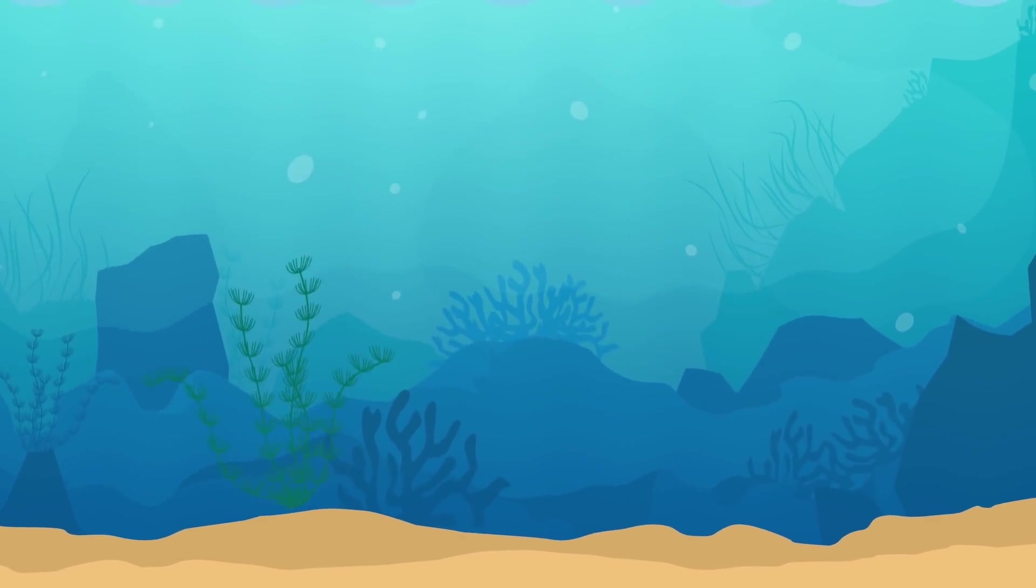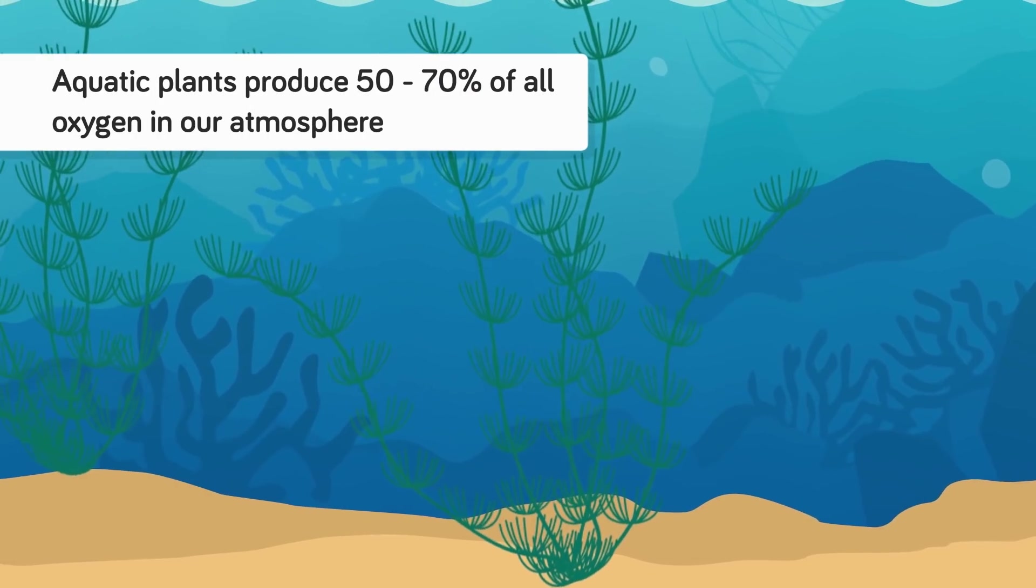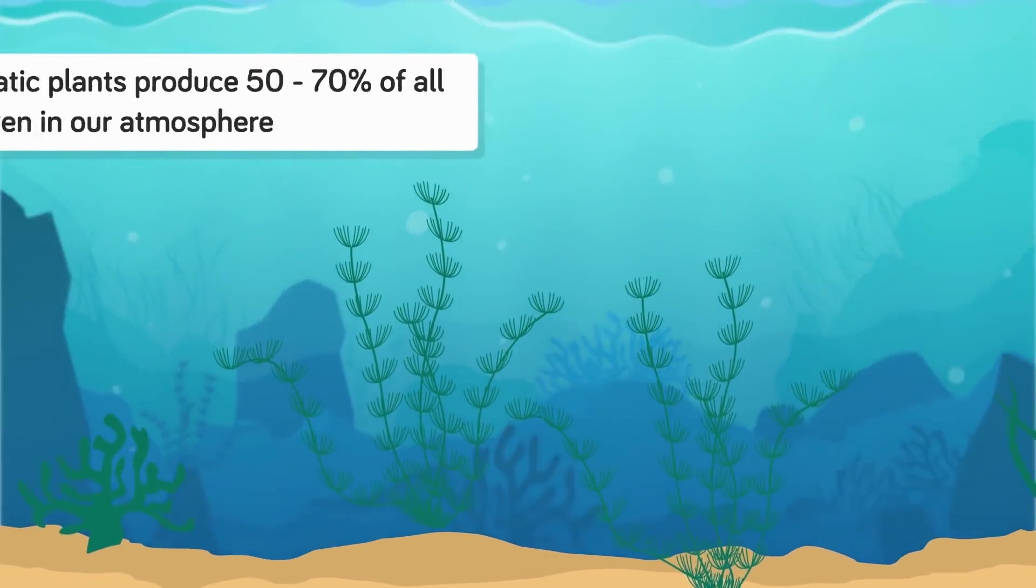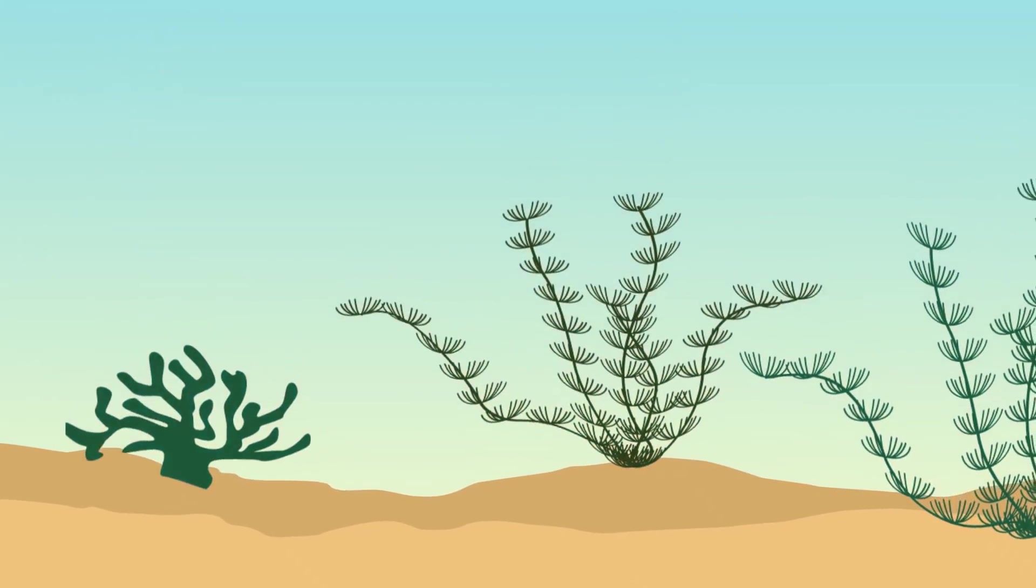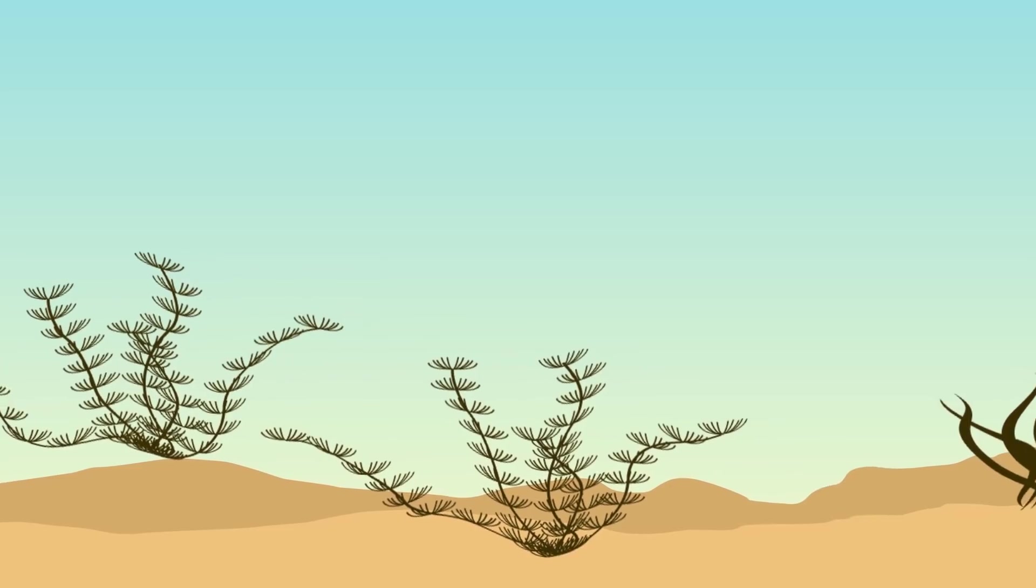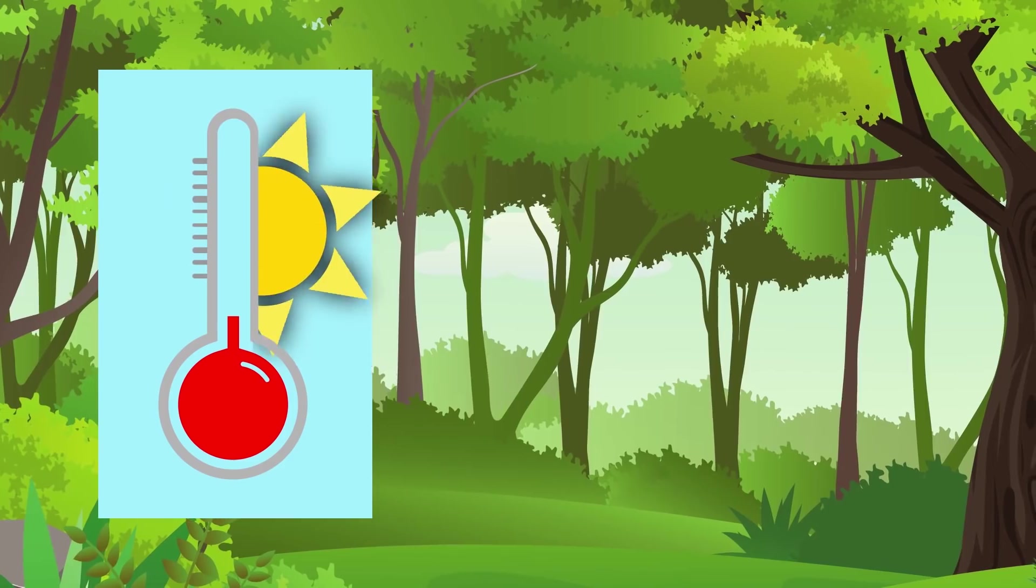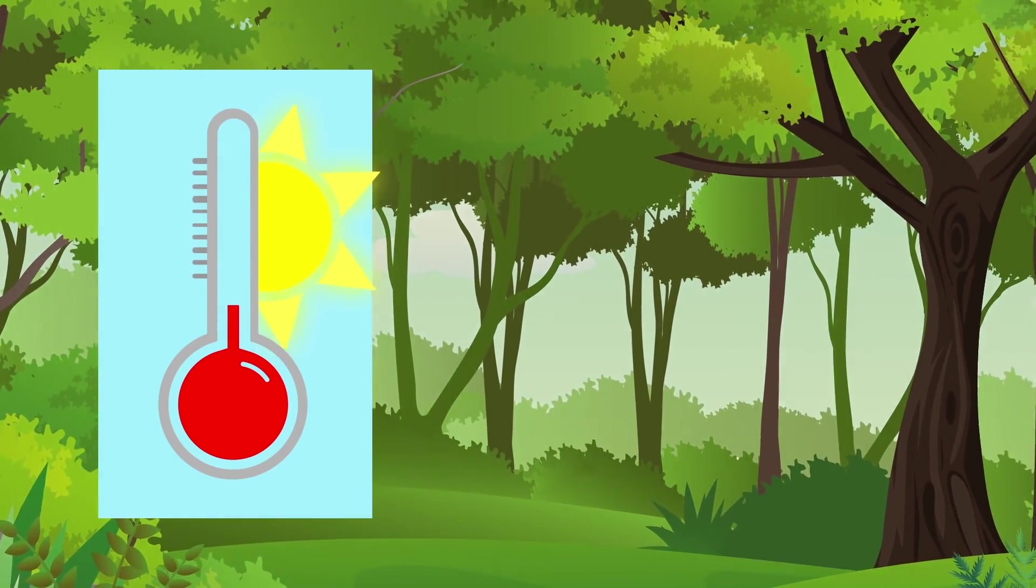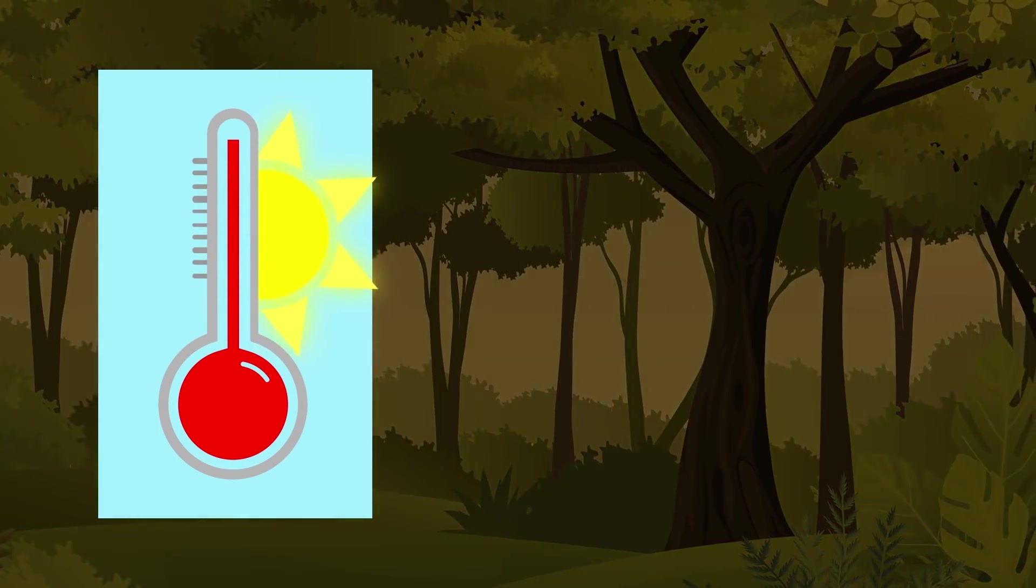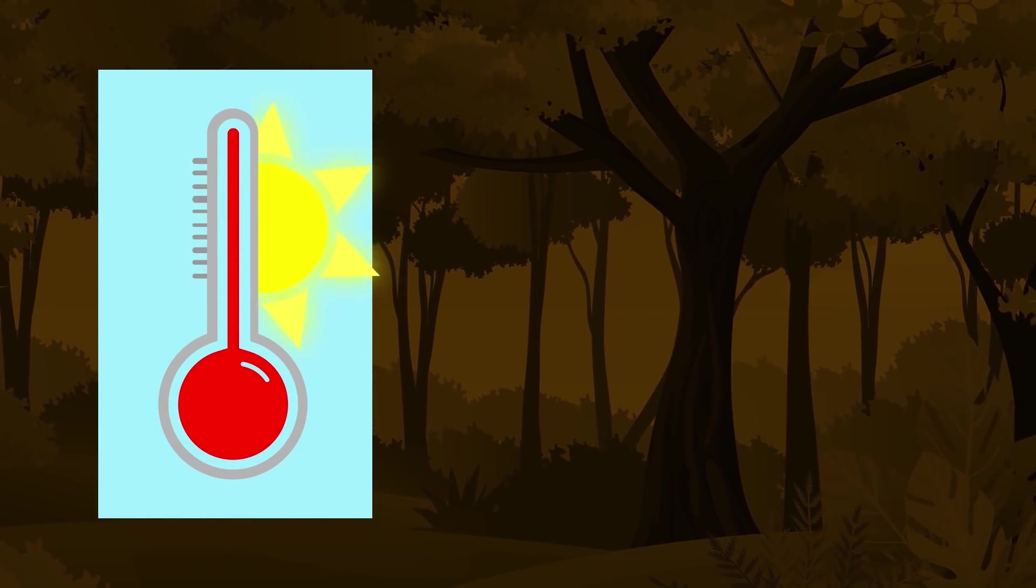Water wouldn't be the only dwindling resource though. 50-70% of all oxygen in our atmosphere is produced by aquatic plants. With those plants going extinct, the amount of oxygen in the atmosphere would rapidly decrease, while the amount of unprocessed carbon dioxide would increase. With terrestrial plants dying off due to a lack of water and the scorching temperatures, within a few hundred years, levels of oxygen in our atmosphere wouldn't be high enough for you or I to take even a single breath.